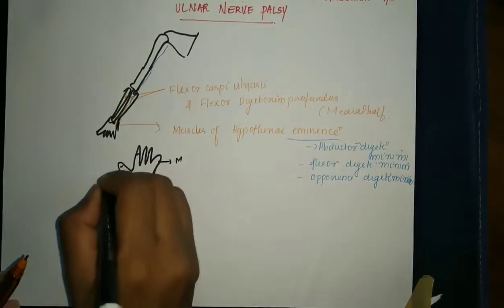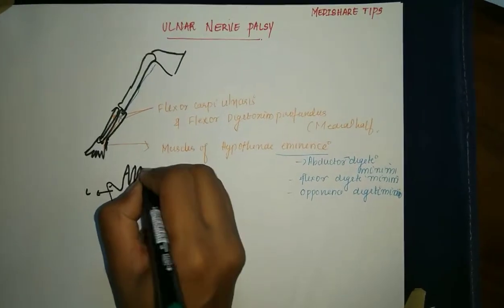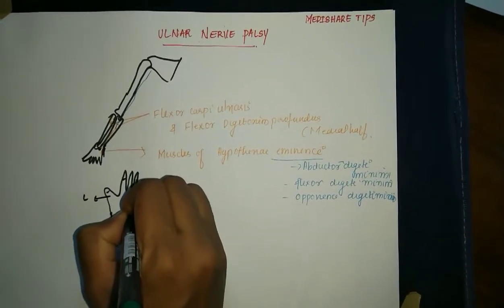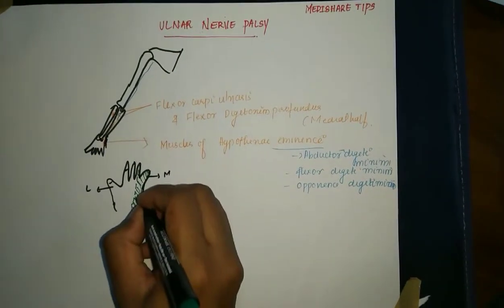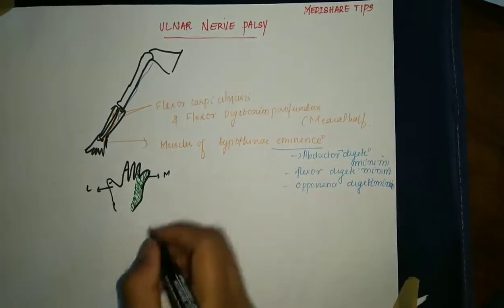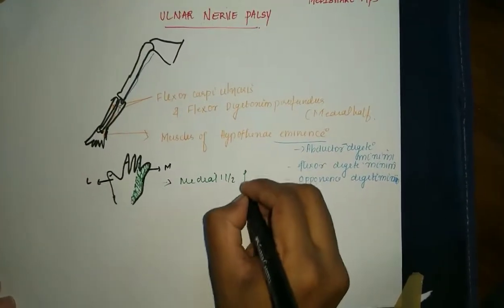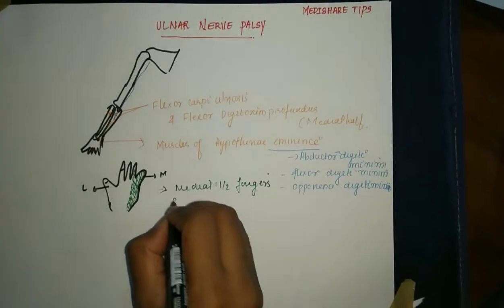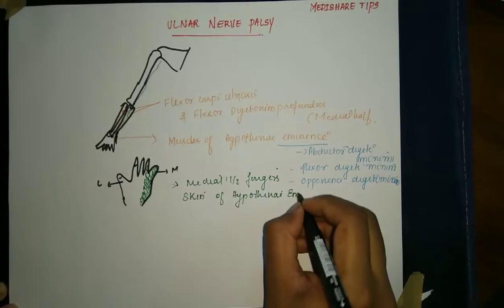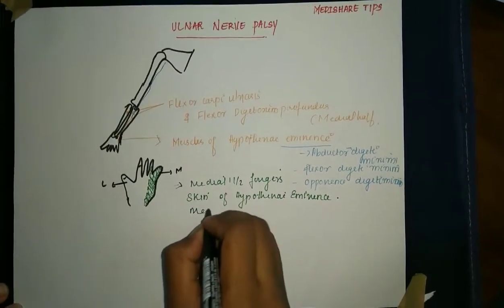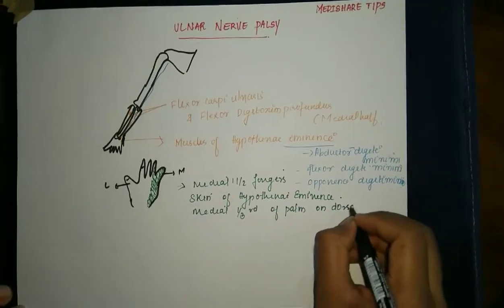On the medial aspect, the sensory supply covers the medial one and a half fingers, the skin of the hypothenar eminence up to the distal phalanx, and the skin over the hypothenar eminence on both the dorsal and palmar aspect.